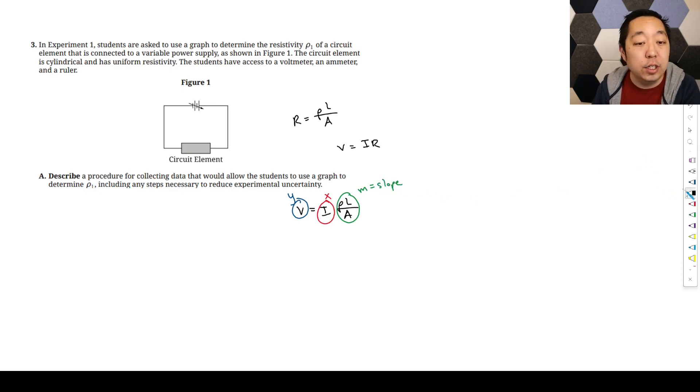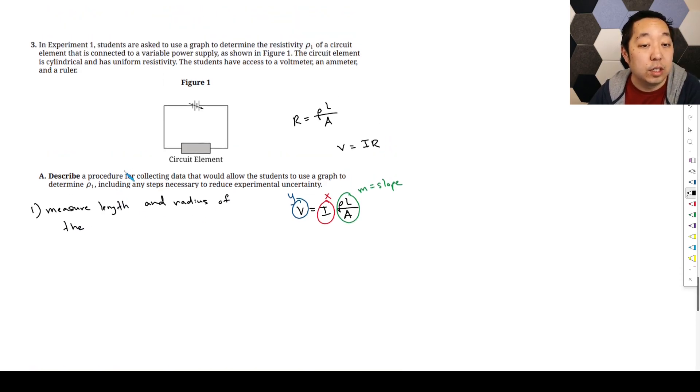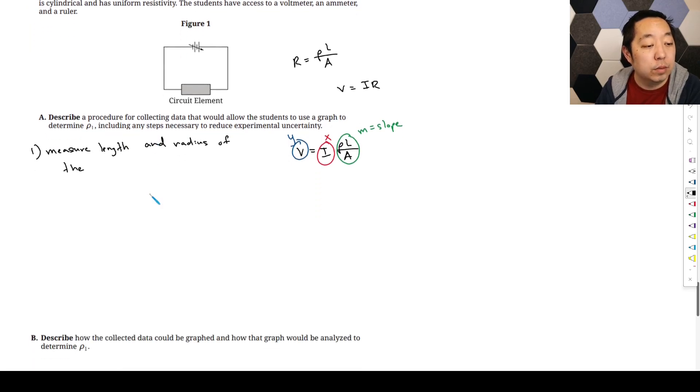So we need to measure some dimensions here and then use that slope. First, we're going to measure the length and radius of the cylindrical resistor.